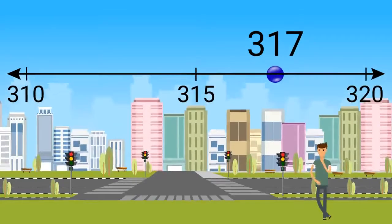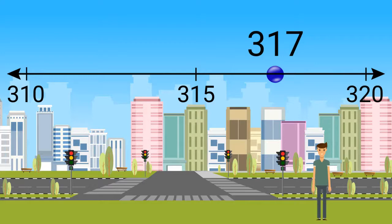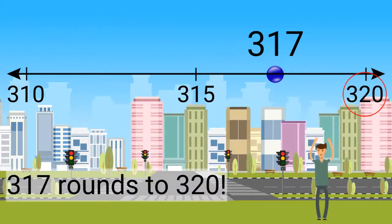What is 317 rounded to the nearest 10? 317 rounds up to 320. 317 is closer to 320 than 310.